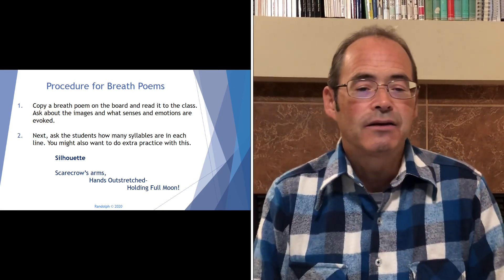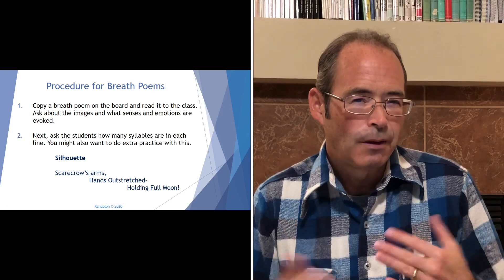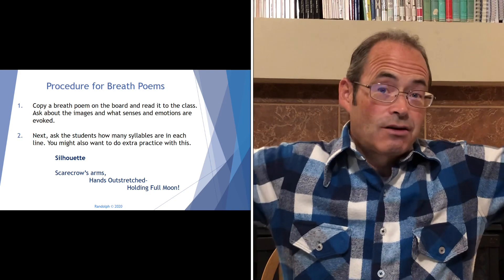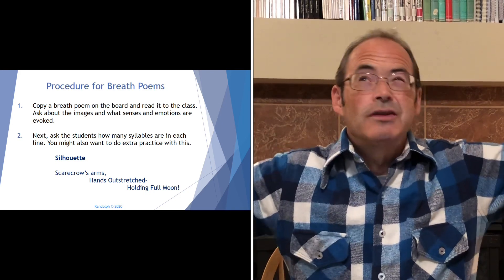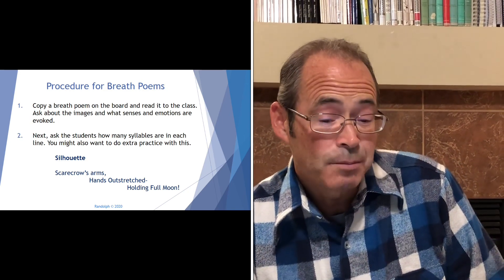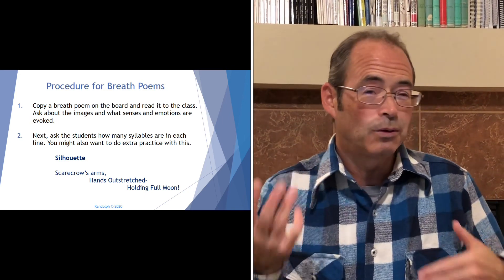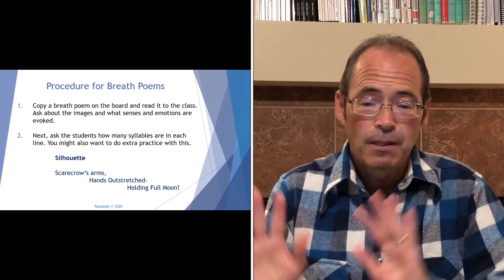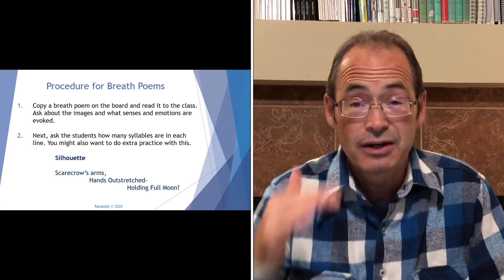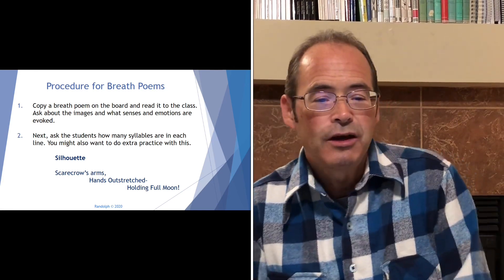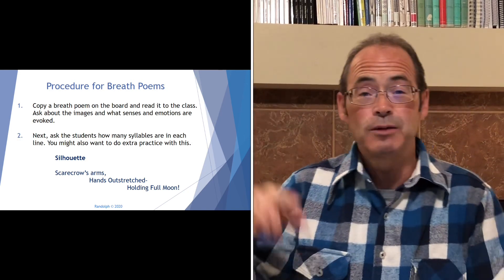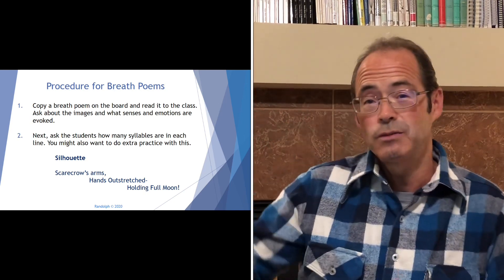Then ask about the images and what senses and emotions are evoked. When I've done this with students, they talk about feeling the body of a scarecrow — the smell of straw, it's full moon time, maybe they hear crickets, the cool of the earth — so a lot of different senses come about. Next, ask the students how many syllables are in each line. You might want to do extra syllable practice — look around and say there's the wall, how many syllables? There's the window, how many syllables? The wall has one, window has two. Scarecrow's arms: three. Hands outstretched: three. Holding full moon — four on the last one.